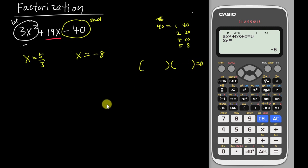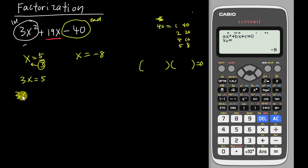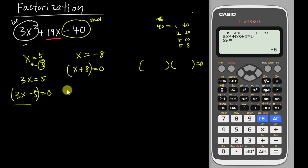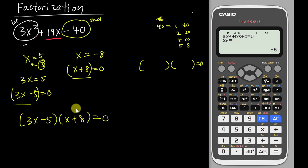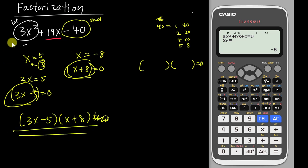Now work backwards from those answers. For the fraction 5/3: multiply 3 with x to get 3x, then move 5 to the other side to get 3x − 5 = 0 — that's the first bracket. For negative 8: move it to the other side to get x + 8 = 0 — that's the second bracket. So I get (3x − 5)(x + 8) = 0. If the question doesn't have equals zero, just write the two brackets as your final answer.